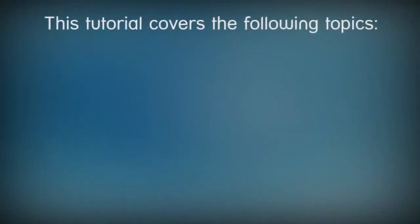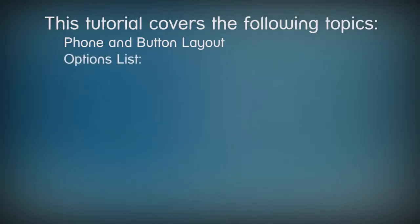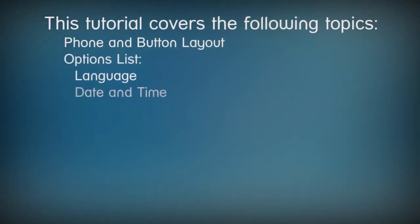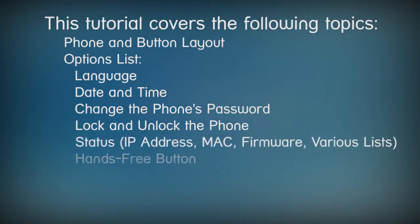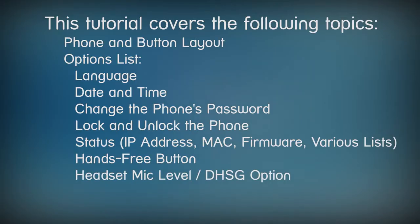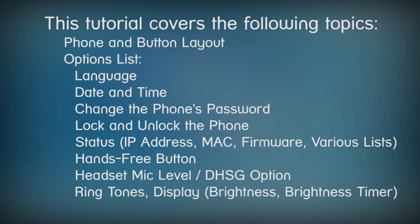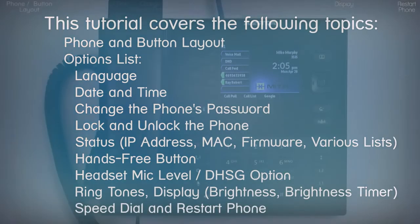In this tutorial I'll cover the following topics. We'll take a quick look at the layout of the phone, then go through a series of options where you can choose a language, modify how the date and time are displayed, change the phone's password, lock and unlock the phone, check the status, define how the hands-free button works, adjust the headset microphone level, select DHSG, select a ringtone, change the brightness of the LCD screen and brightness timer, and set up speed dial and restart the phone.